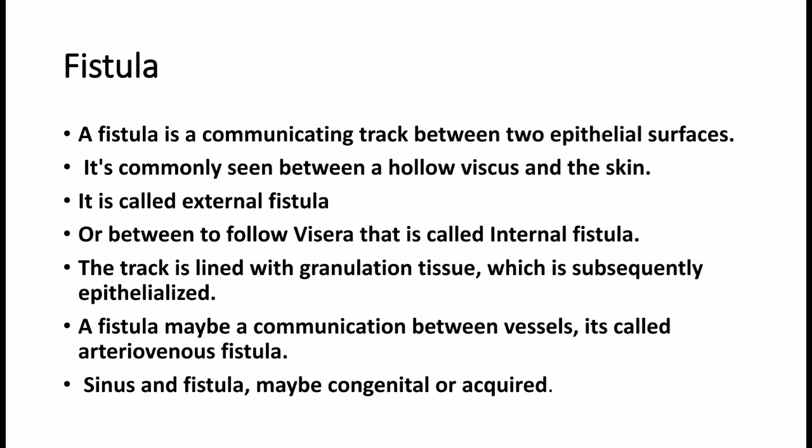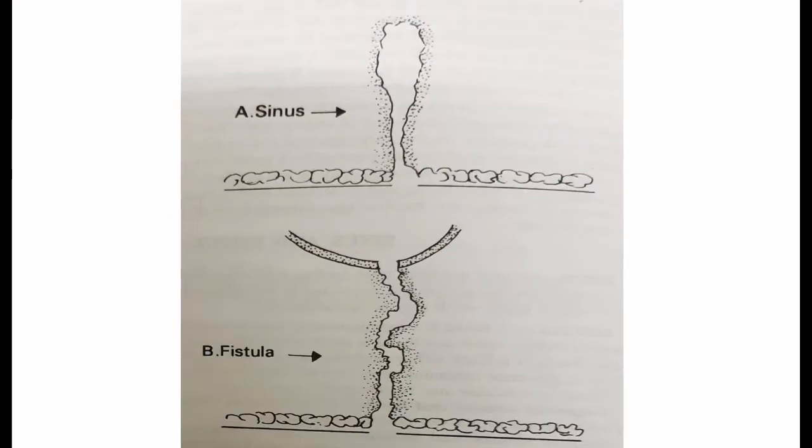A fistula may also be a communication between vessels, in which case it is called an arteriovenous fistula. Sinus and fistula may be congenital or acquired — two types. A sinus has only one opening, whereas a fistula has two openings with a communicating tract.